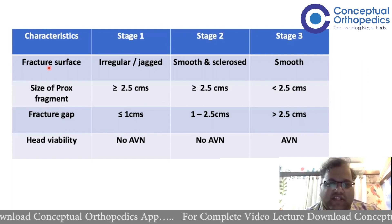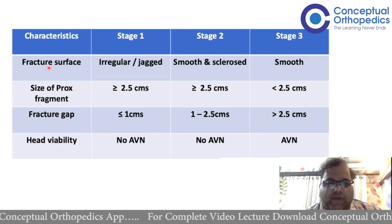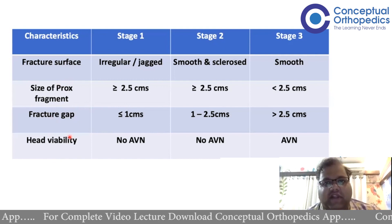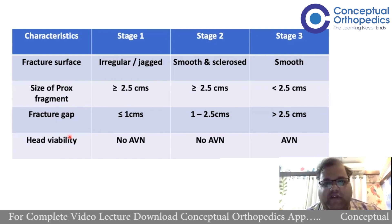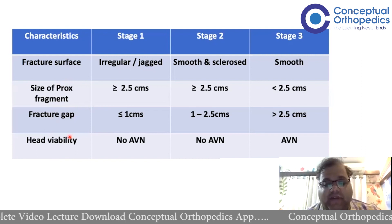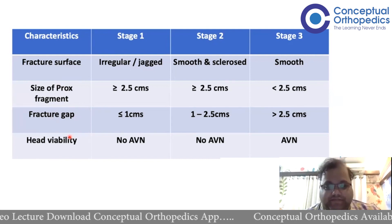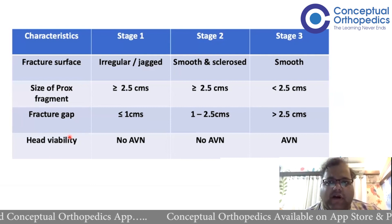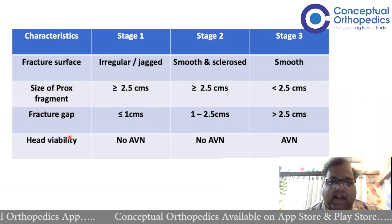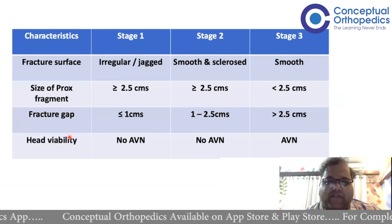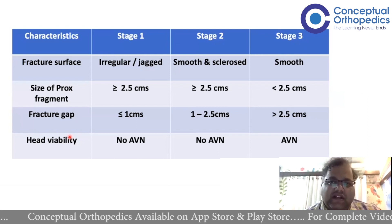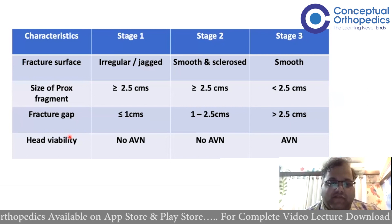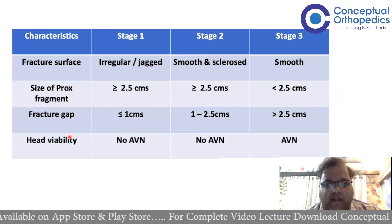Size of the proximal fragment, the fracture gap, and head viability are about how we salvage or replace. If the proximal fragment is more than 2.5 centimeters, a big part of the neck is attached to the head, meaning we have enough space to place an implant and get adequate purchase. But if it's a subcapital fracture without enough space, most implants fail. That is why size of the proximal fragment is important — whether it is more than or equal to 2.5 centimeters, or less.